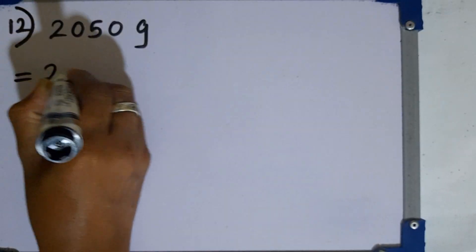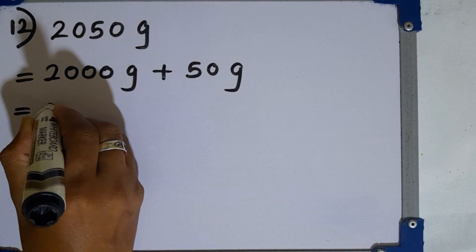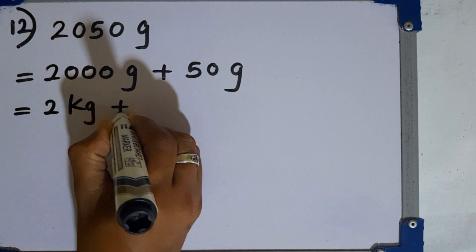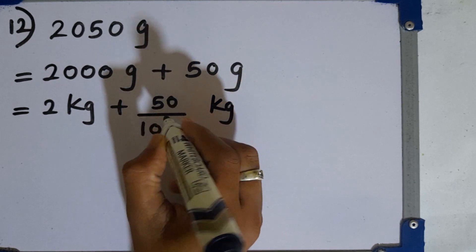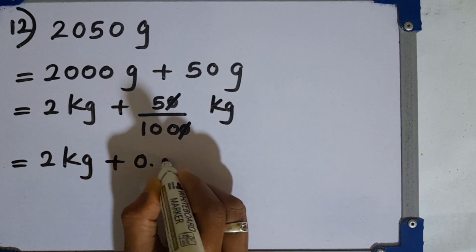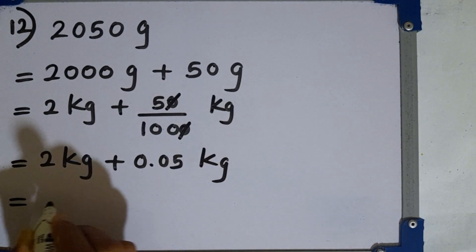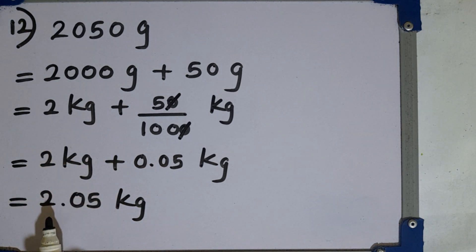Question number 12. Write 2050 grams in kilograms. First we separate this amount into heaps of thousand and the remaining part. I can write like this. 2000 grams plus 50 grams. Then this 2000 grams can be represented as 2 kilograms. Then how to convert this 50 grams into kilograms? We can divide by 1000. Now I can remove 0 and 0 then 2 kilograms plus 0.05 kilograms. Then by adding these two numbers I can take 2.05 kilograms.